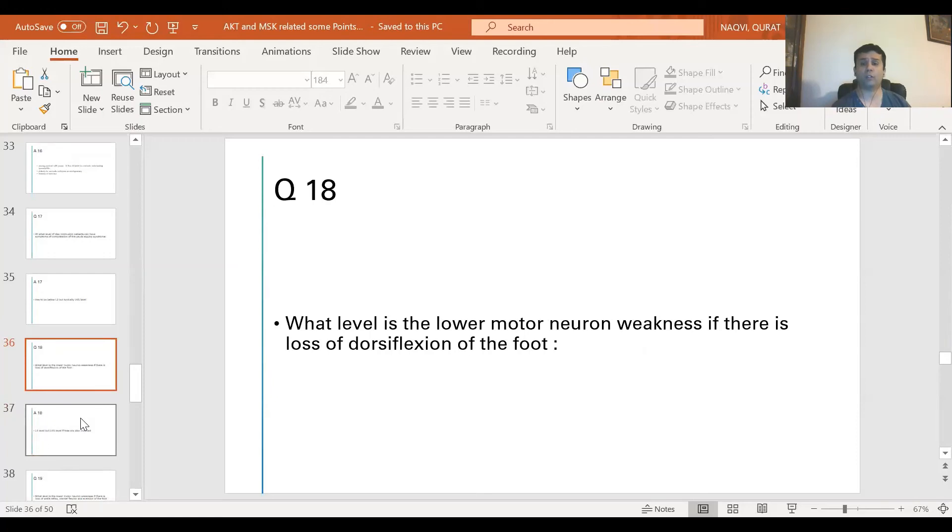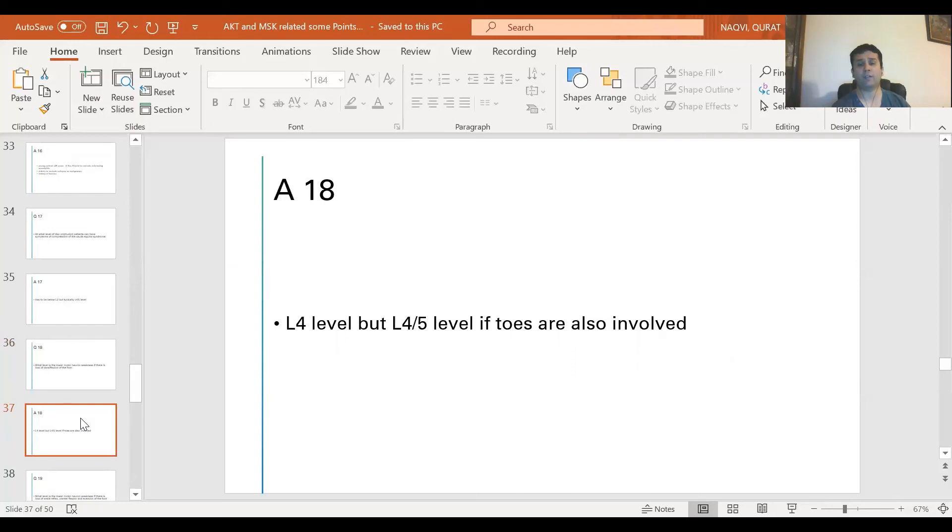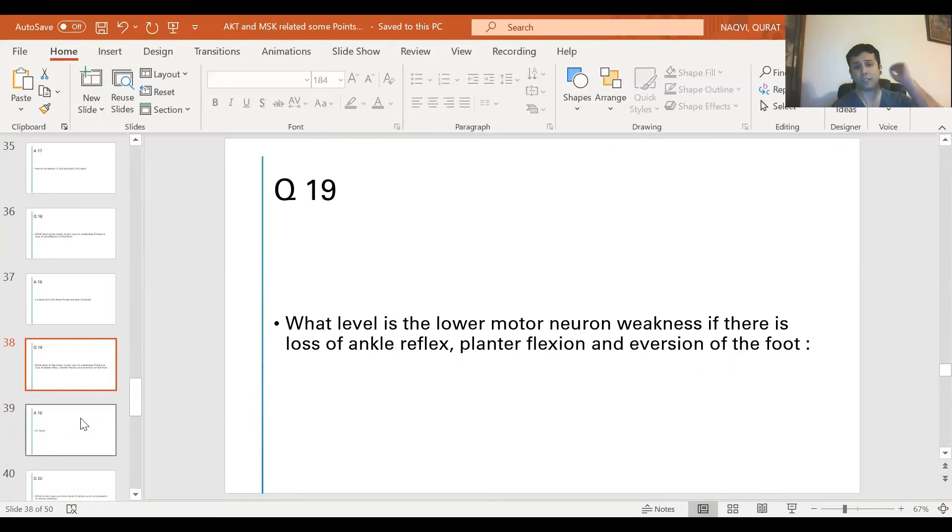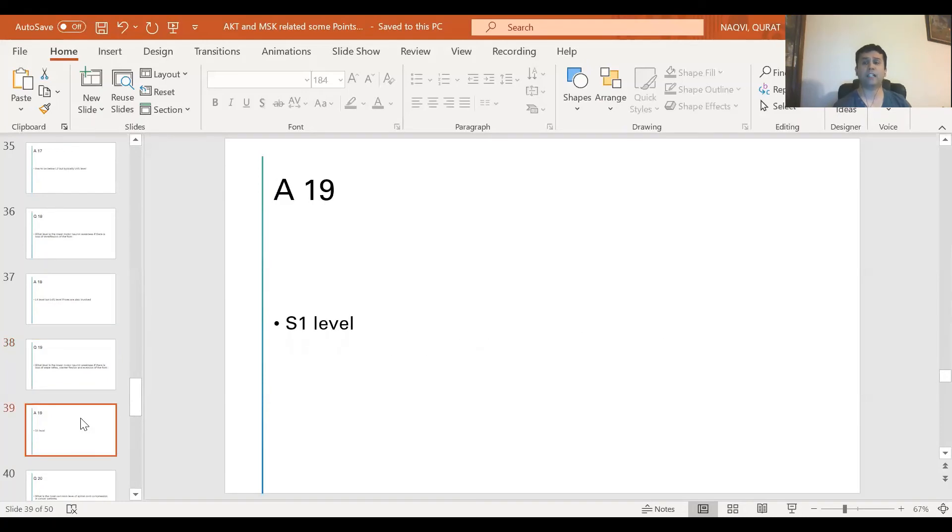Question 19: What level is the lower motor neuron weakness if there is loss of ankle reflex, plantar flexion, and eversion of the foot? The answer is S1 level.